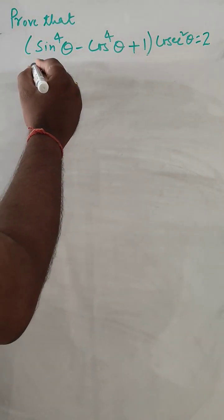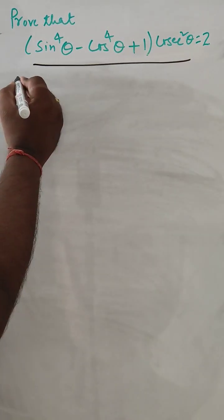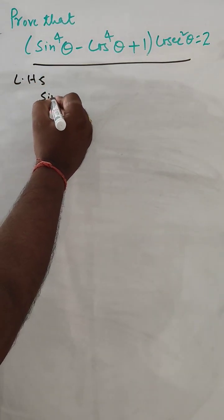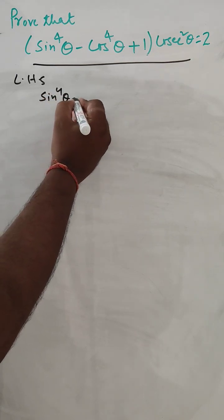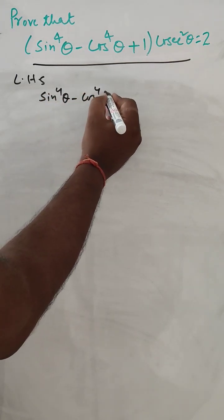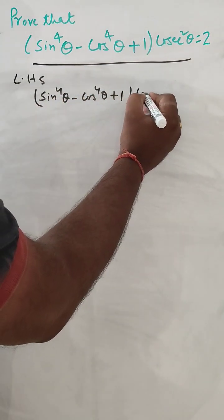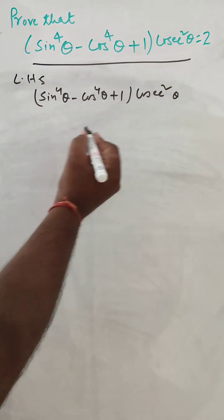So we can take LHS first. From the LHS we have sin to the power 4 theta minus cos to the power 4 theta plus 1 into cos square theta.